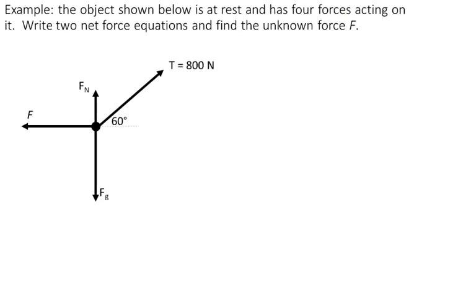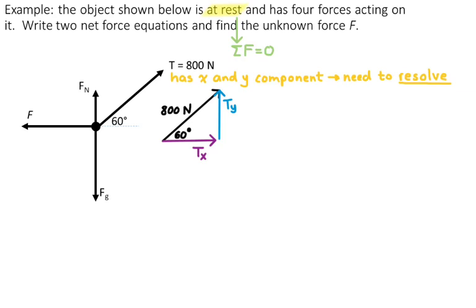Let's look at another example. In this example, we've got four forces acting on it. Again, write two net force equations and find the unknown force F. In this situation, the object is at rest, which tells me the same thing, that the sum of the forces acting on the object are zero. Notice that the tension force is going both up and to the right, which means it has an x component and a y component, and we need to resolve it into x and y components. So I'm going to draw a separate vector diagram to find the x and y components. I can use the cosine function to find Tx. So that's just 800 cosine 60, which will be 400 newtons.